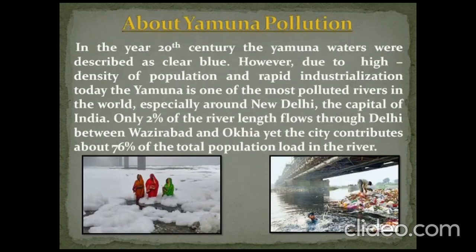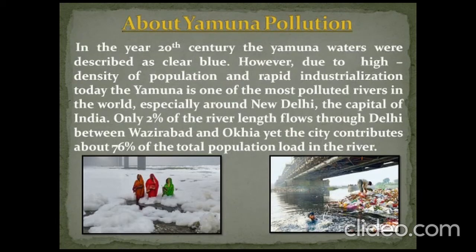In the early 20th century, the Yamuna waters were described as clear blue. However, due to high population density and rapid industrialization today, the Yamuna is one of the most polluted rivers in the world, especially around New Delhi, the capital of India. Only 2 percent of the river's length flows through Delhi between Wazirabad and Okhla, yet the city contributes about 76 percent of the total pollution load in the river.